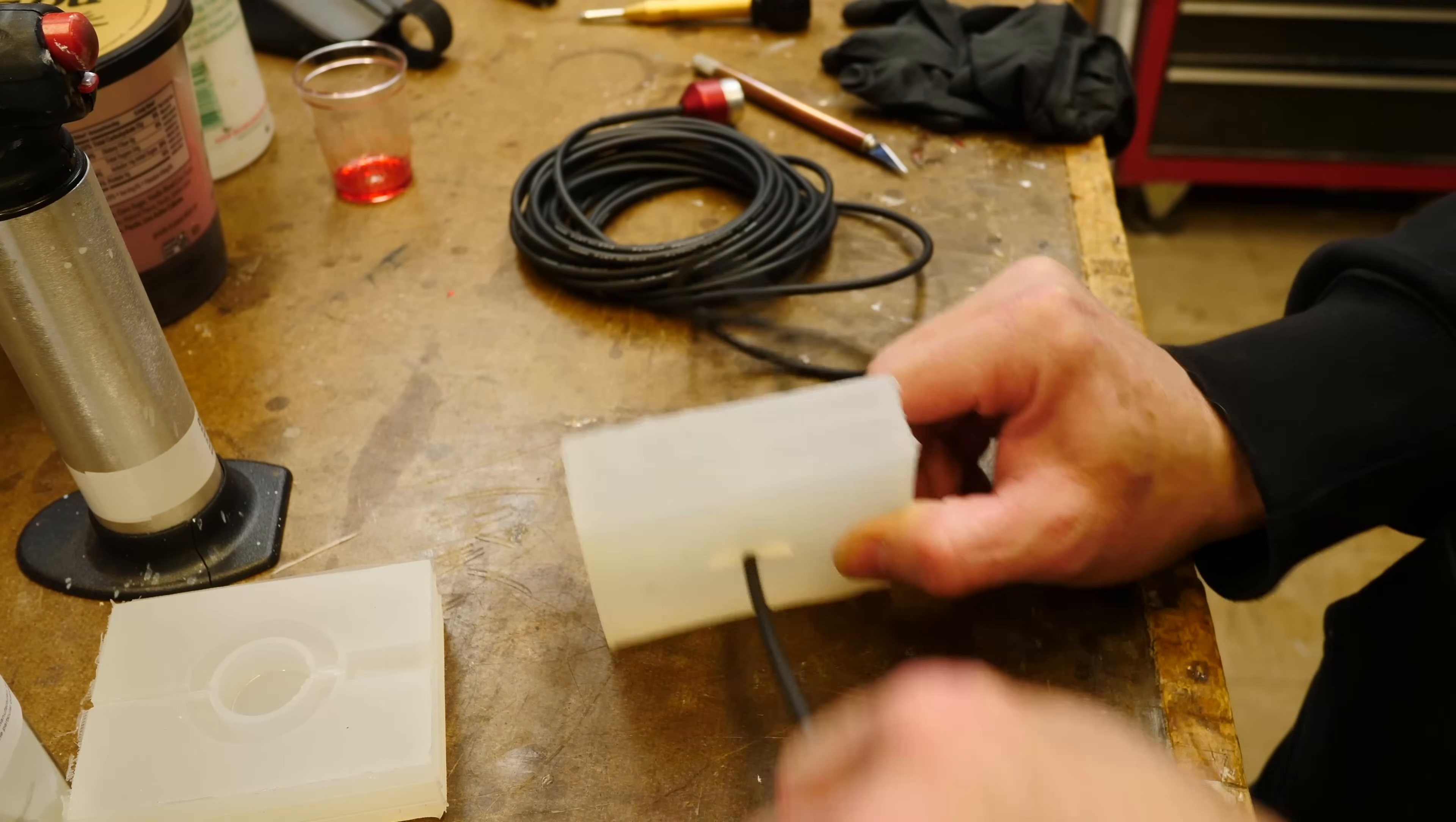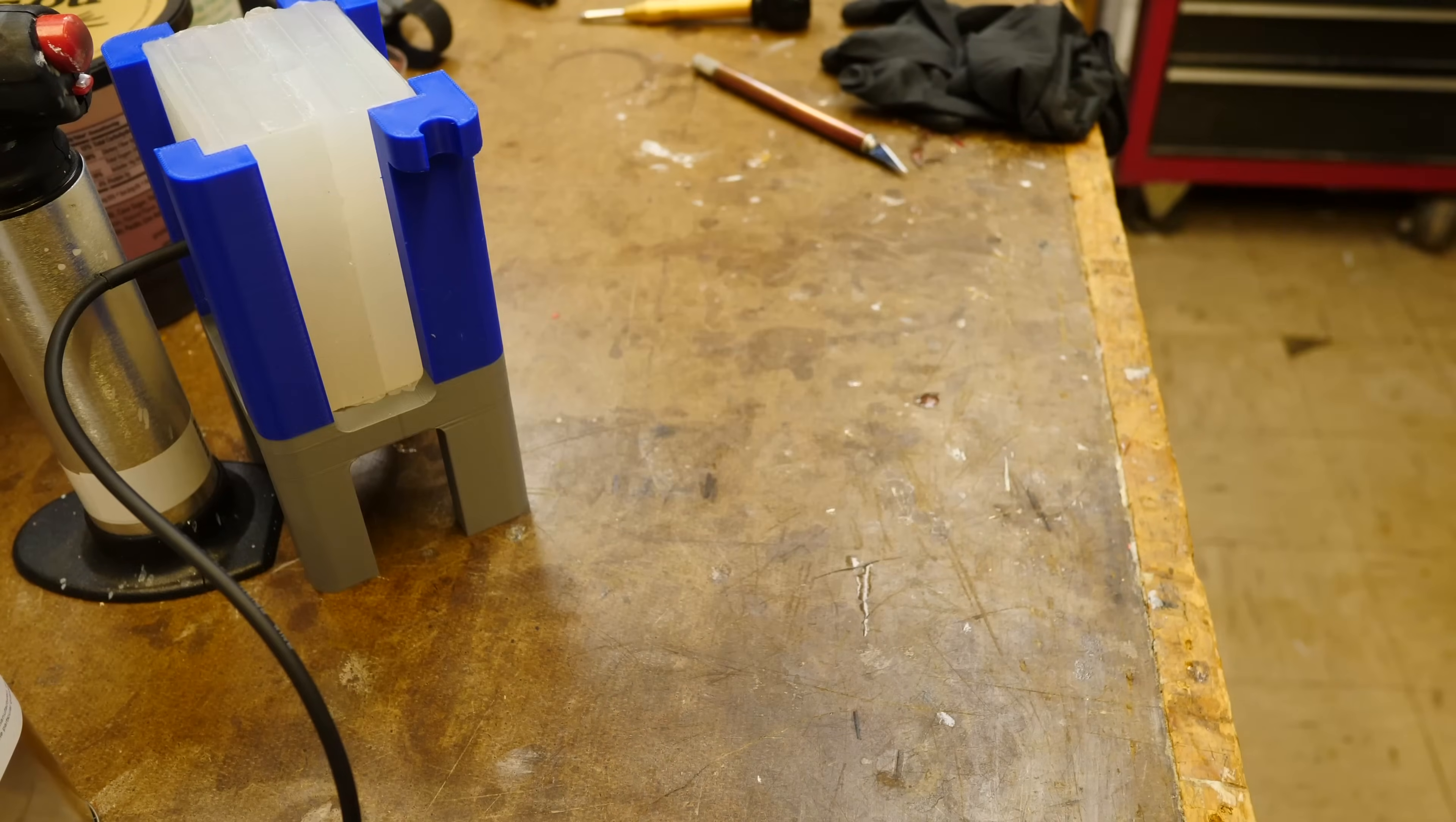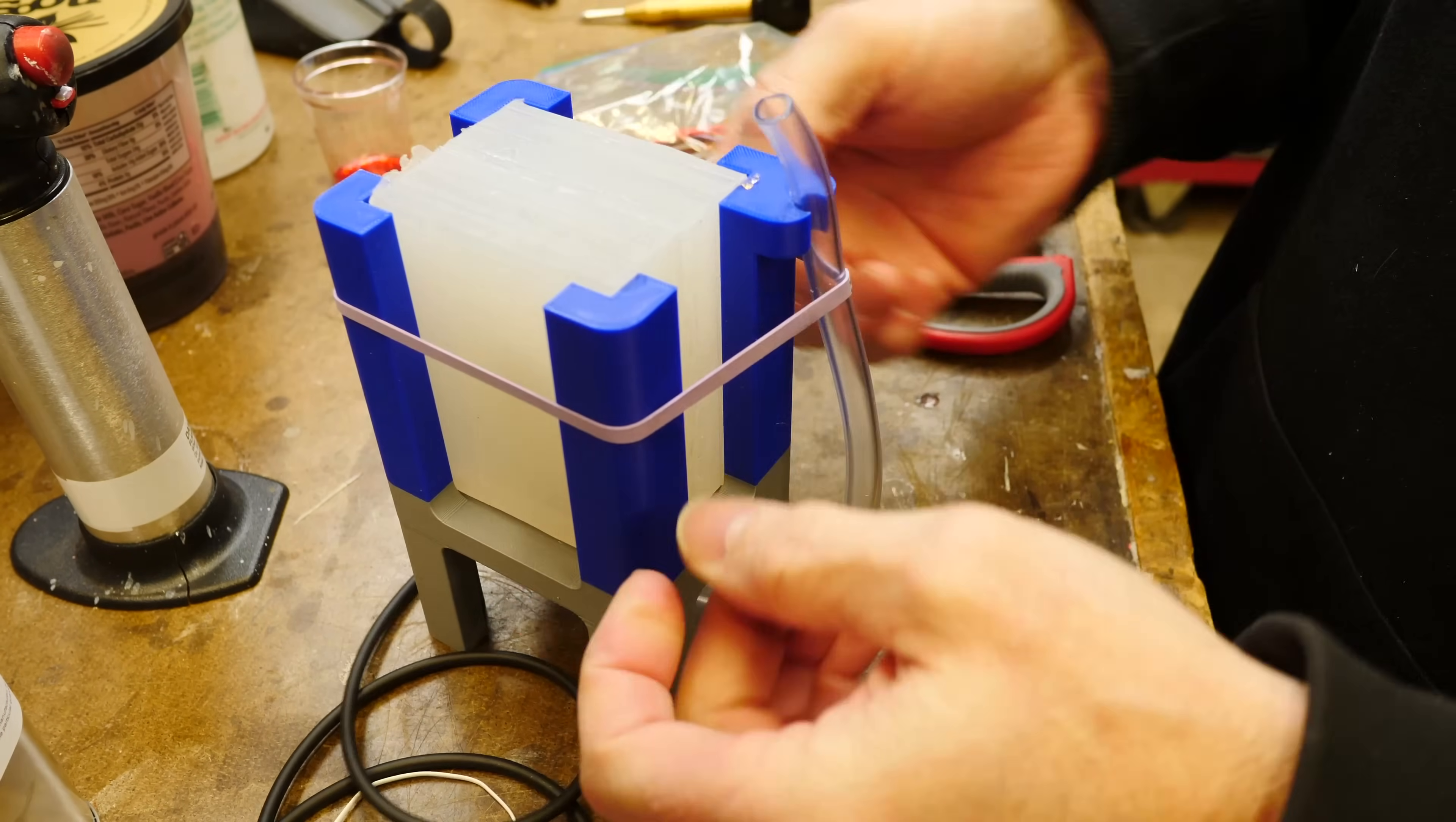Now, to mold this part, we're going to inject resin into the mold from the bottom of the mold, and to do that, we need a piece of tubing, and that tubing will go into the bottom of the mold, and then the excess resin will vent out the top, and now you can see why I've printed this special holder.